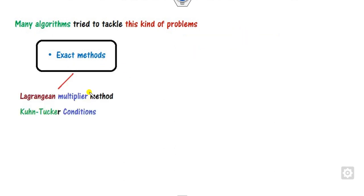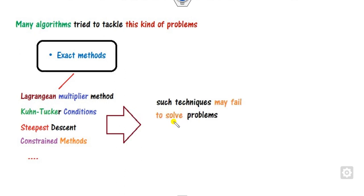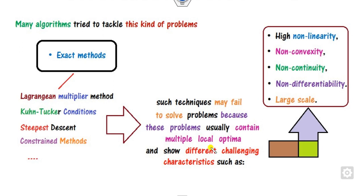Exact methods include Lagrange multipliers, KKT conditions, steepest descent, and others. But these methods are very limited in use because they require the gradient. Also, such methods may fail when the dimension increases, when there are multiple local optima, due to high non-linearity, non-convexity, non-continuity, or non-differentiability. Whenever the size of the problem is very large, it is very difficult to handle with steepest descent, KKT conditions, or any constraints. So these exact methods are very limiting in use.